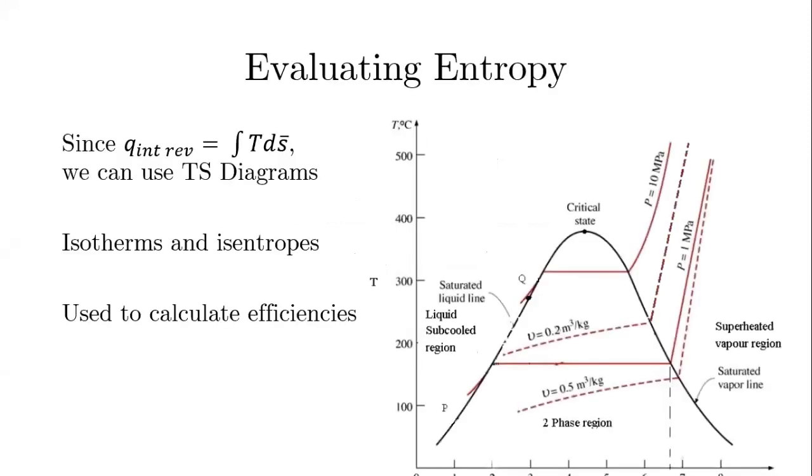So first, let's talk about how to evaluate entropy. We saw previously that for a reversible process, one where equilibrium is prevalent throughout the entirety of the process, we can equate the heat within that process as the integral of the temperature times with respect to the entropy. So Q is equal to the integral of TdS.